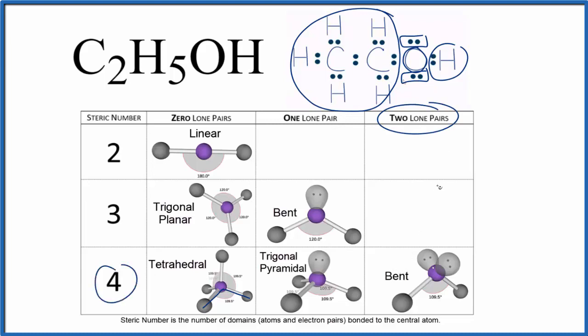So we go over and for the oxygen we have a bent molecular geometry and the bond angle would be about 109.5. Probably a little different since we have just hydrogen here and then these other atoms.